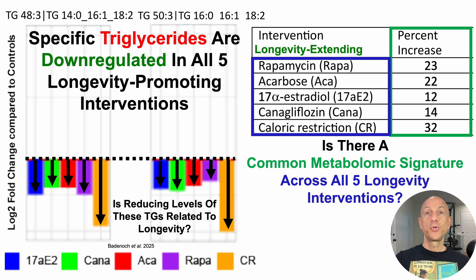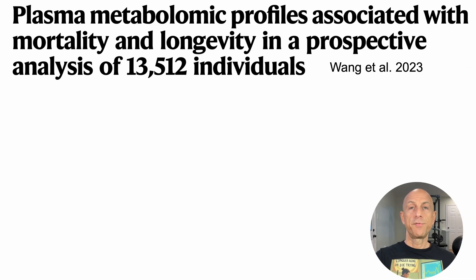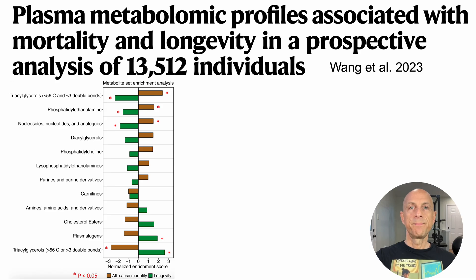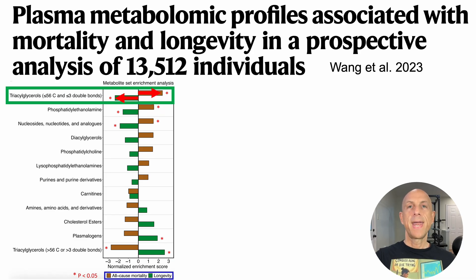Is reducing levels of these triglycerides related to longevity? Looking at human data from a study on metabolite groups and their association with all-cause mortality risk and longevity, atop the list are triglycerides with less than or equal to 56 carbons and less than or equal to three double bonds. TG48-3 and TG53 fall into this category, and this group was associated with increased all-cause mortality risk and decreased odds of reaching 85 years, which was defined as longevity in this study.